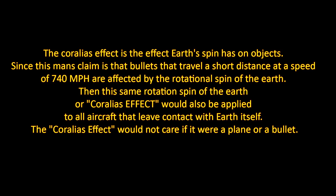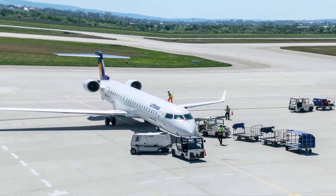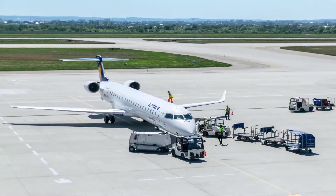If that is the case, then the same rotational spin of the Earth, or Coriolis effect, would also be applied to aircraft that leave contact with the Earth itself. The Coriolis effect would not care if it were a plane or a bullet but affect both objects the same. This plane is attached to the ground. If the Earth were spinning beneath the plane, the plane would spin at the same rate as the Earth, or the plane would be affected by the Coriolis effect, meaning that the plane has to be traveling at the same rate the Earth is.